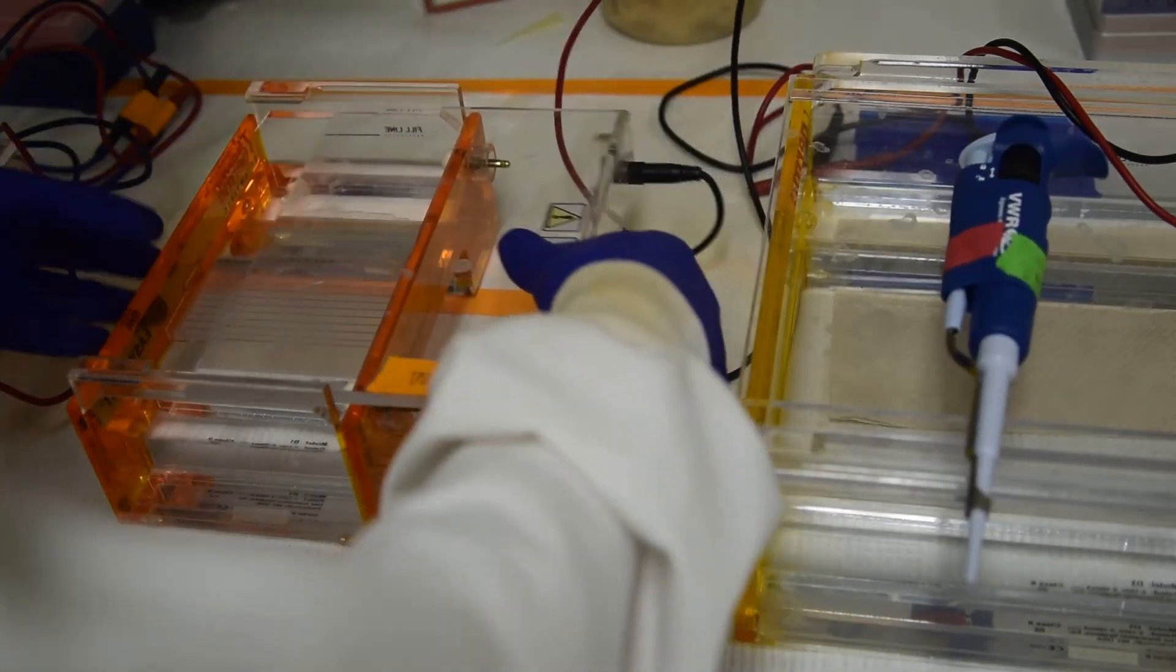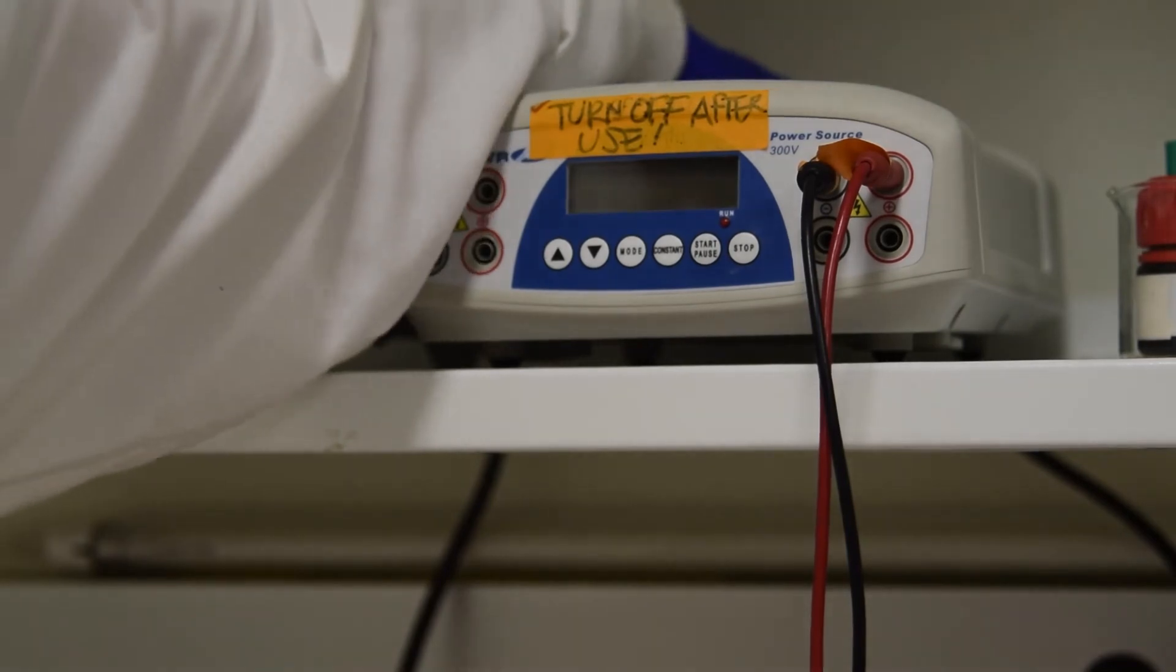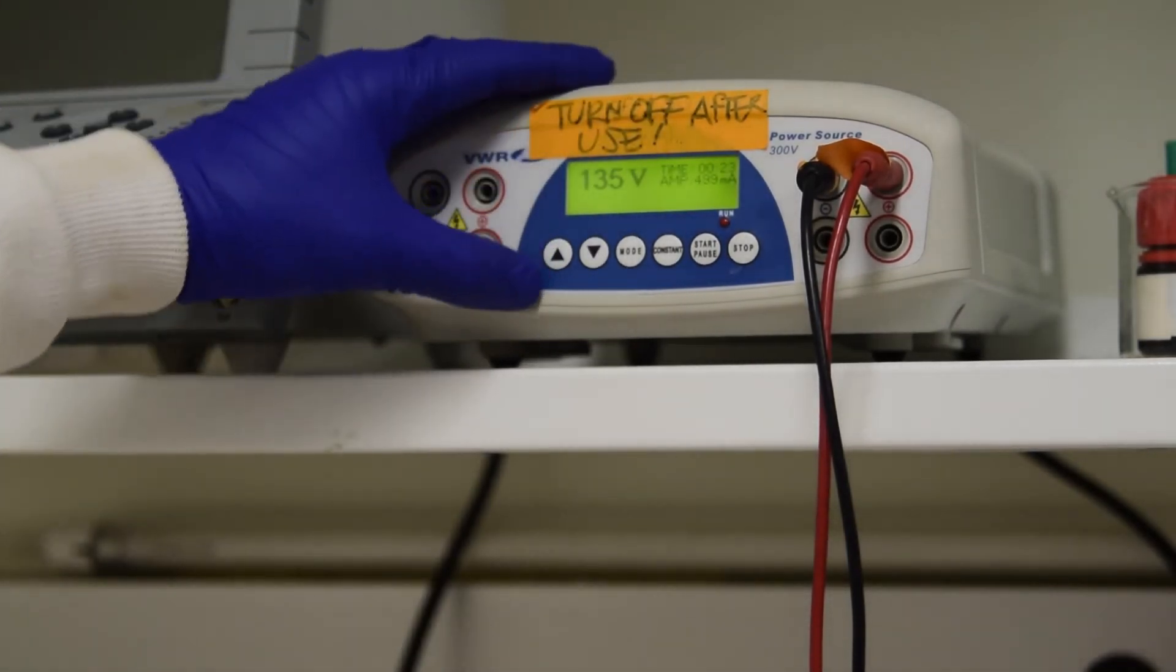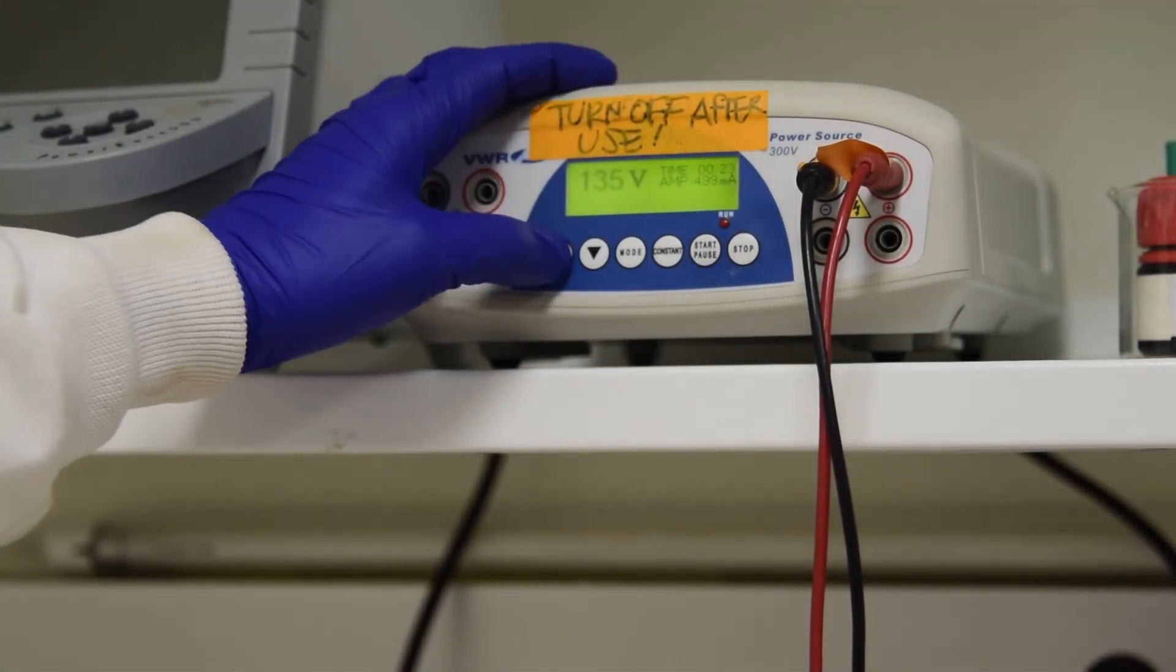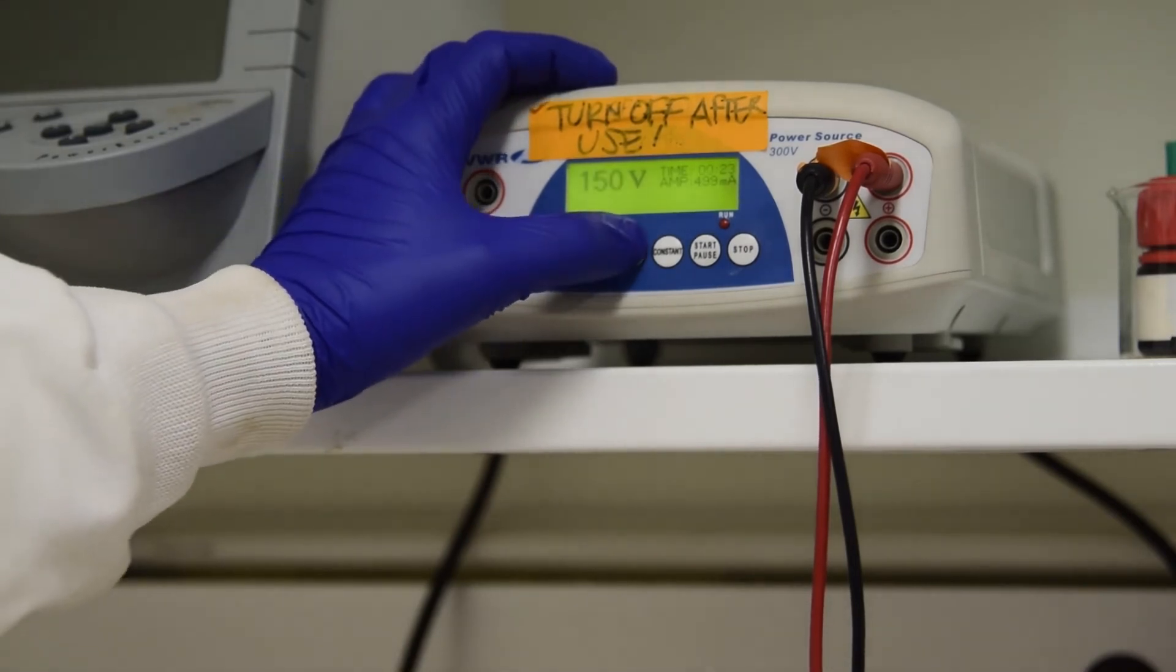Close the gel box and set to your desired voltage and time. 150 volts for 9 minutes works well for 1.5 kilobase amplicons.